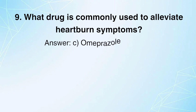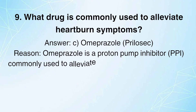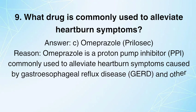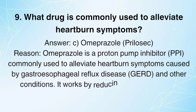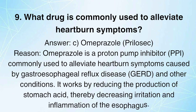Omeprazole (Prilosec). Reason: Omeprazole is a proton pump inhibitor (PPI) commonly used to alleviate heartburn symptoms caused by gastroesophageal reflux disease (GERD) and other conditions. It works by reducing the production of stomach acid, thereby decreasing irritation and inflammation of the esophagus.